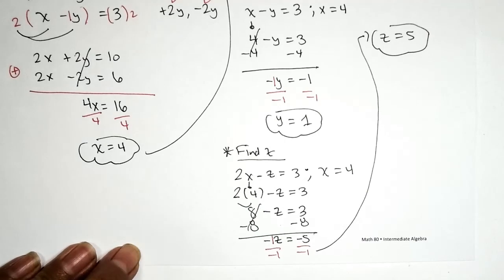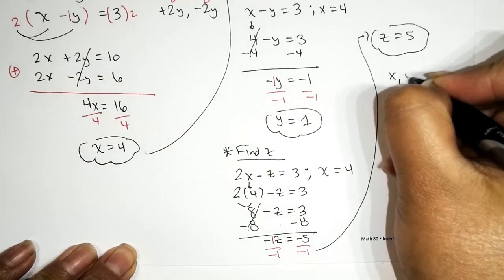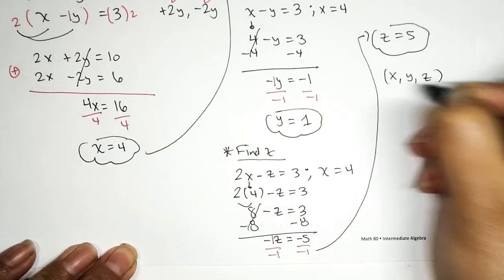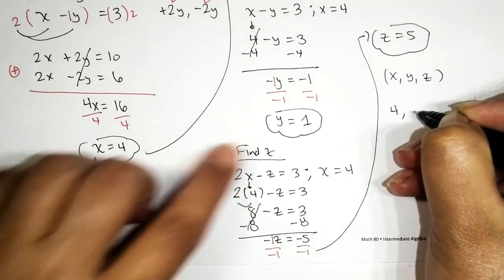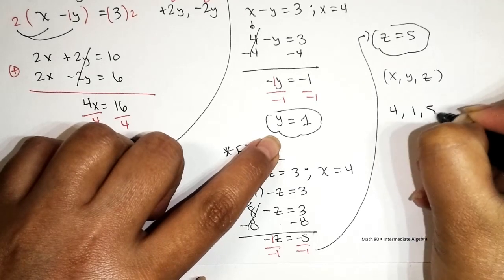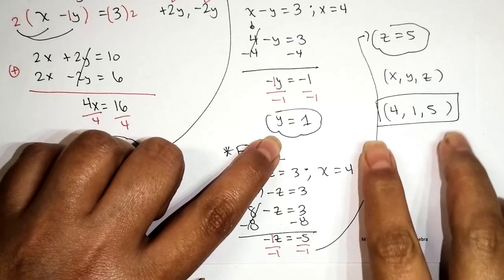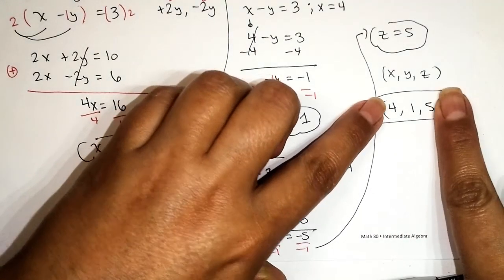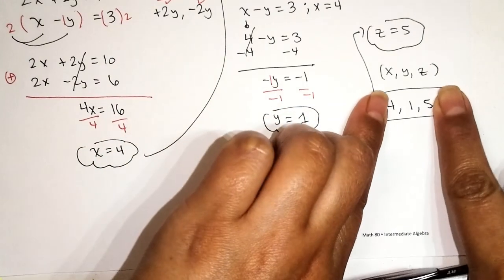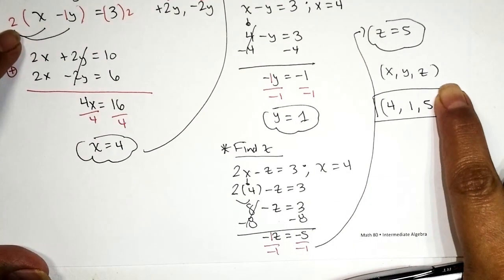If this system has one solution, the answer should be written as an ordered triple of the form (X, Y, Z). The value of X is 4, the value of Y is 1, and the value of Z is 5. So our answer is (4, 1, 5). Don't forget to put parentheses around the ordered triple — without them it's not an ordered triple or a point, it's just a list of numbers like a grocery list.